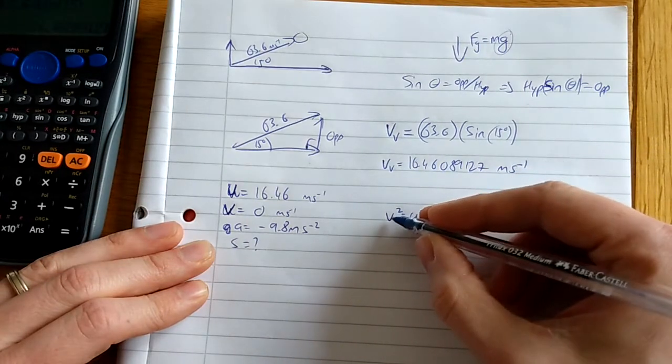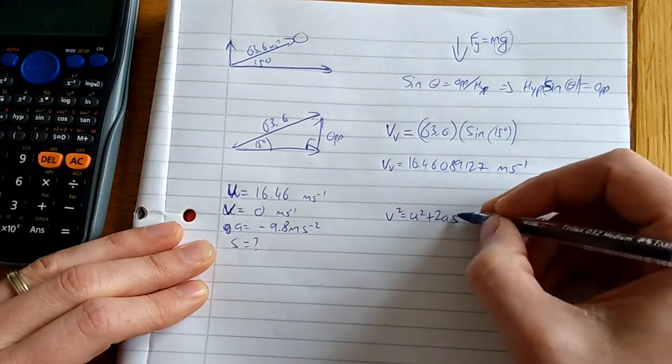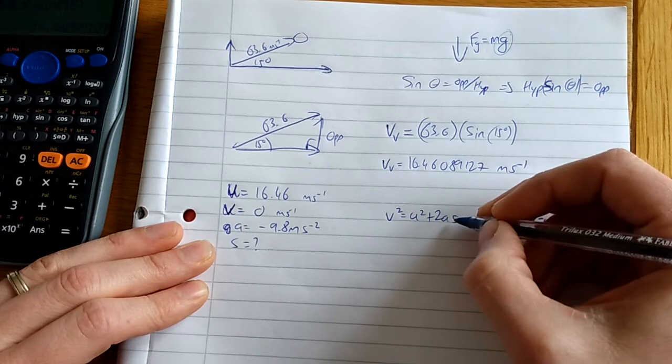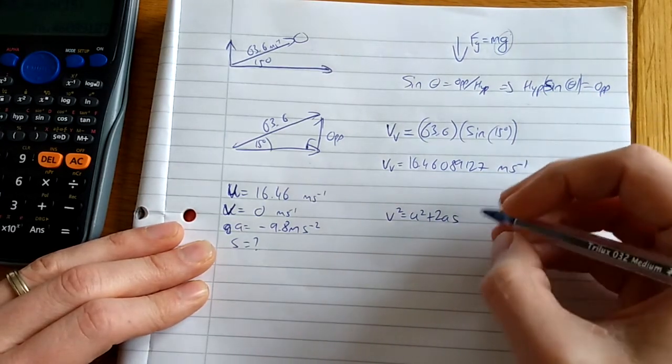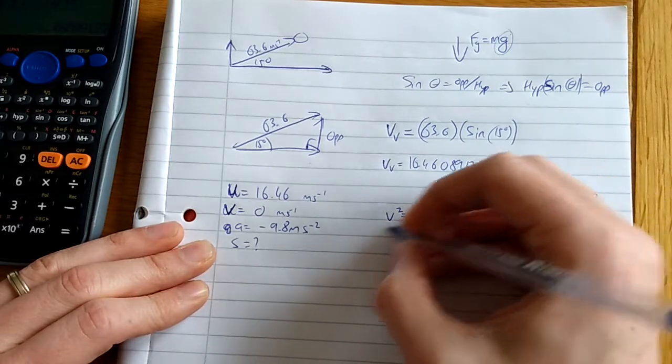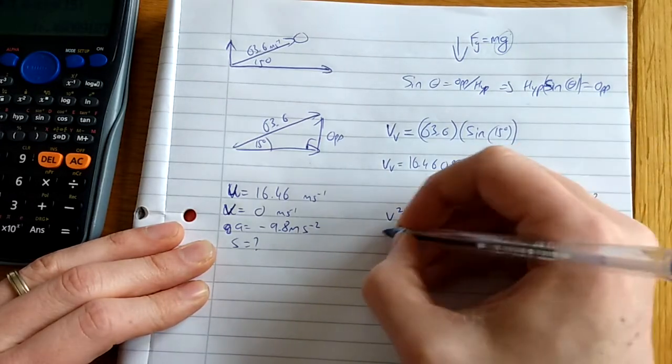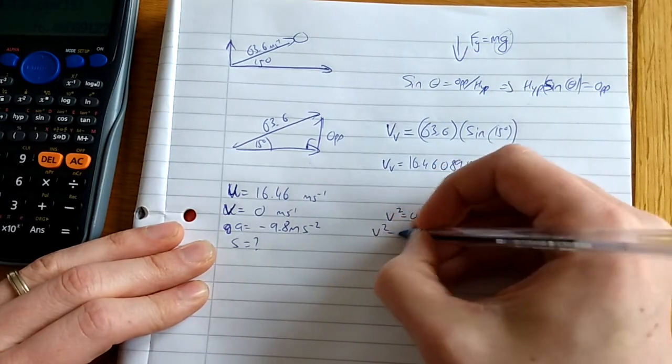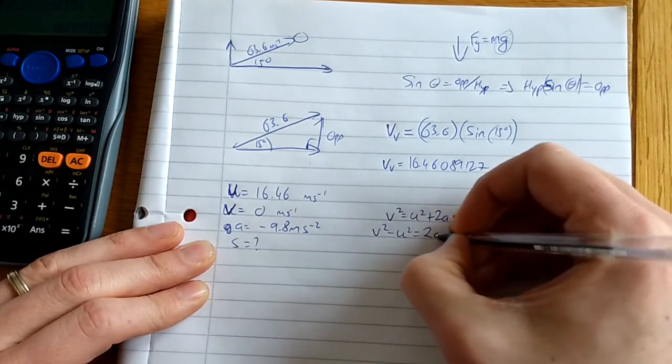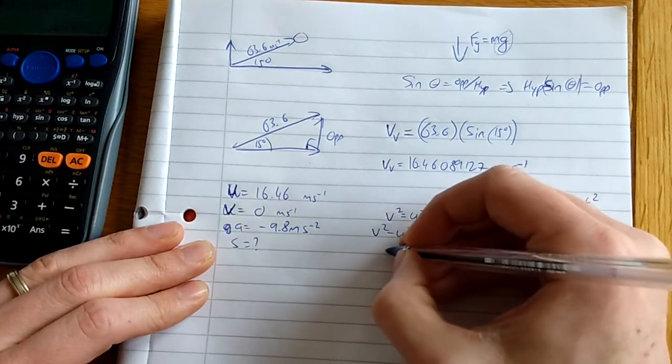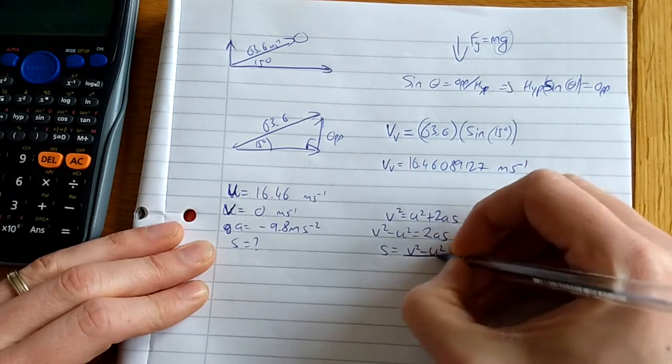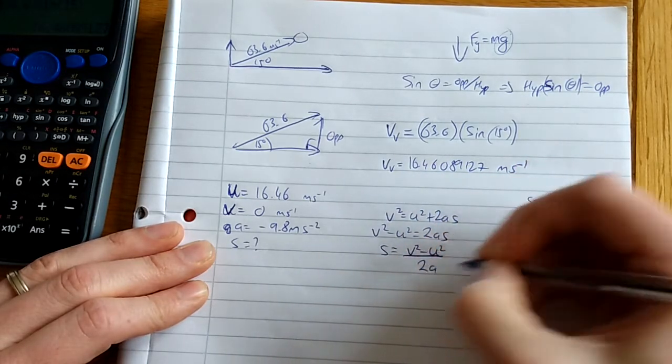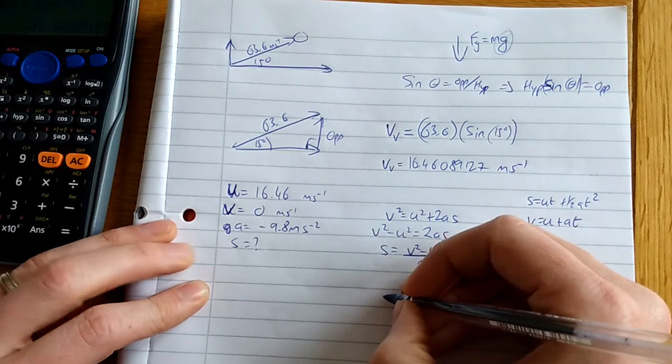Going back, I know my final velocity. What am I looking for? s, displacement - the total vertical height. I need to rearrange this formula. v² - u² = 2as, then divide everything by 2a. So s = (v² - u²)/(2a). That's my displacement. Can you still see that?